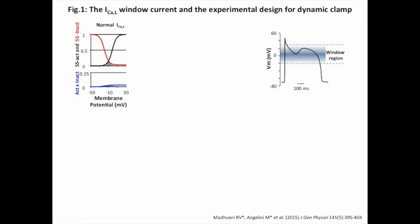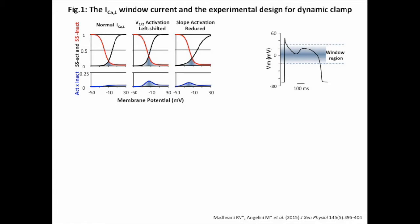Modification of the L-type calcium channel steady-state properties alter the window current, such as a shift of the half-activation potential, a reduction of the slope of the activation voltage dependence, or an increase of the non-inactivating pedestal current.